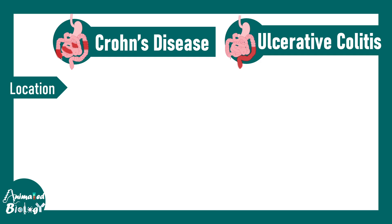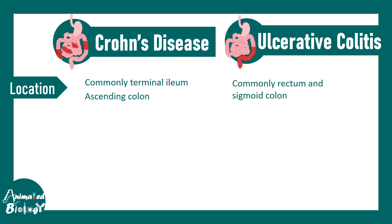Regarding location: Crohn's disease generally affects portions of the small intestine, especially the ileum, and the ascending colon. In ulcerative colitis, the rectum and sigmoid colon are commonly affected. It has to be remembered that the rectum is spared in Crohn's disease but is affected in ulcerative colitis.